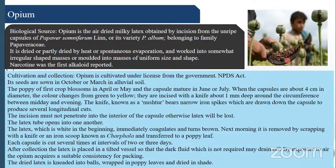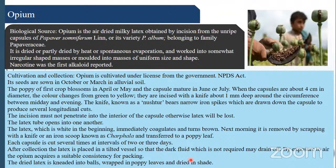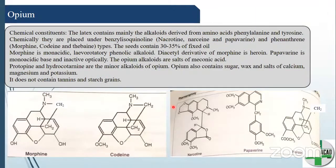The incision must not penetrate into the interior of the capsule, otherwise latex will be lost. The latex, which is white initially, immediately coagulates and turns brown. Next morning it is removed by scraping with a knife or iron scoop called charfala and transferred to a poppy leaf. Each capsule is cut several times at intervals of two to three days. After collection, latex is placed in a tilted vessel so that dark fluid drains off. By exposure to air, opium acquires a suitable consistency for packaging, then kneaded into balls, wrapped in poppy leaves, and dried in shade.